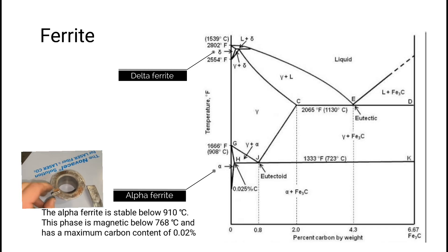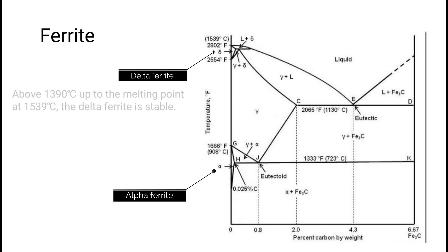This phase is magnetic below 768 degrees Celsius and has a maximum carbon content of 0.02 percent. Above 1390 degrees Celsius up to the melting point of 1539 degrees Celsius, the delta ferrite is stable.